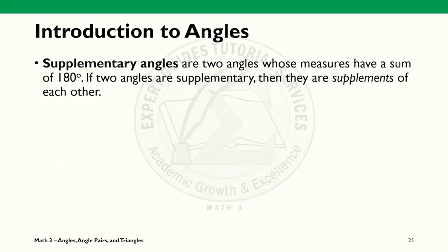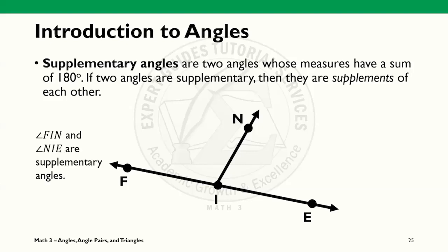Supplementary angles are two angles that when summed would equate to 180 degrees. Linear pairs are always supplementary angles, but not the other way around. We can see here in this slide that angles FIN and NIE are supplements of each other.